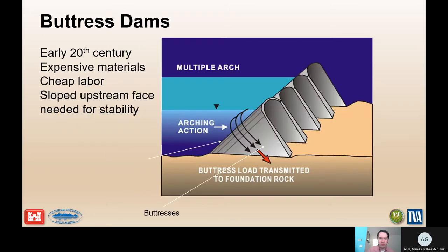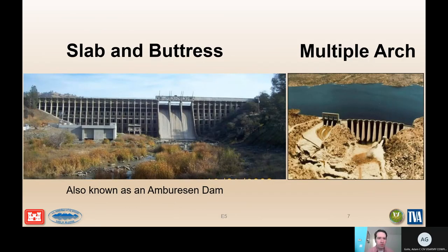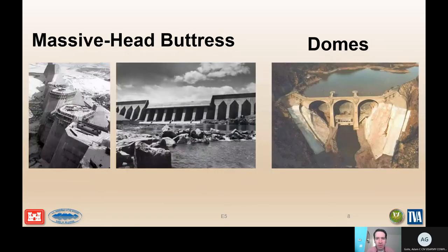In a typical free body diagram, the upstream pool creates not only a horizontal load on the structure but also a vertical load that increases stability by increasing the vertical weight through the buttress and down into the foundation. Some examples of buttress dam types you might encounter are slab and buttress dams, also called Ambursen dams — those two names are interchangeable — as well as multiple arch buttress dams, massive head buttress dams, and dome buttress dams.